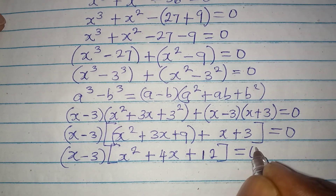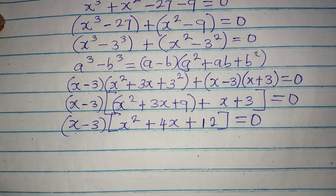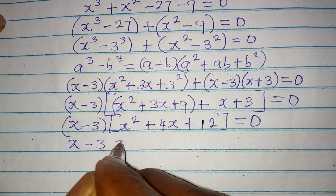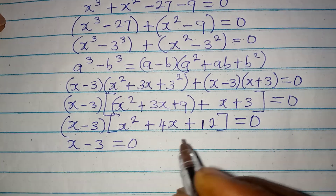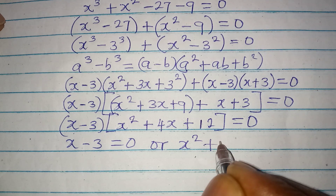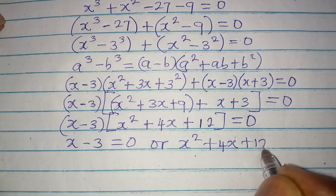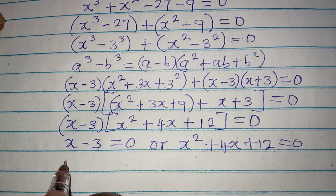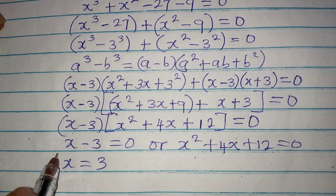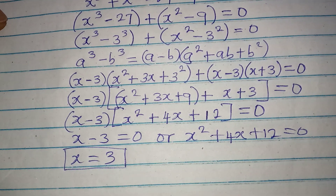Now we apply the zero product rule. Either x minus 3 equals 0, or x squared plus 4x plus 12 equals 0. From x minus 3 equals 0, x equals 3, which is our first value of x.